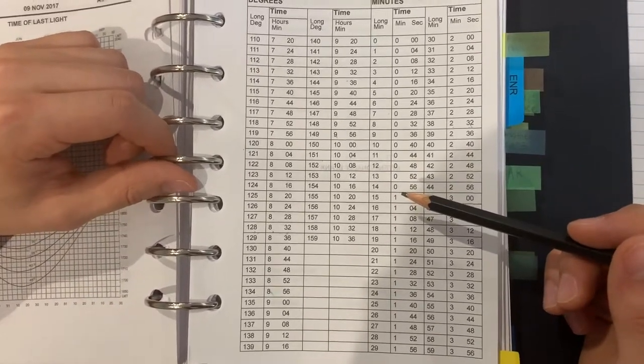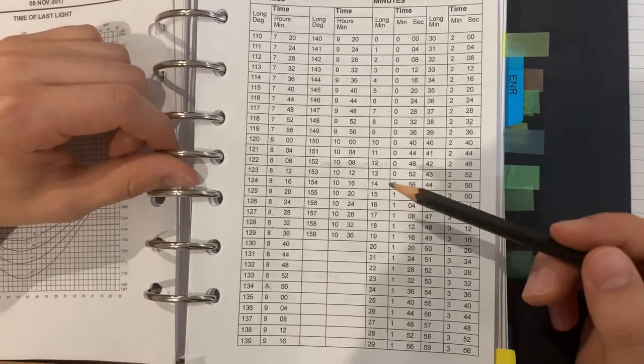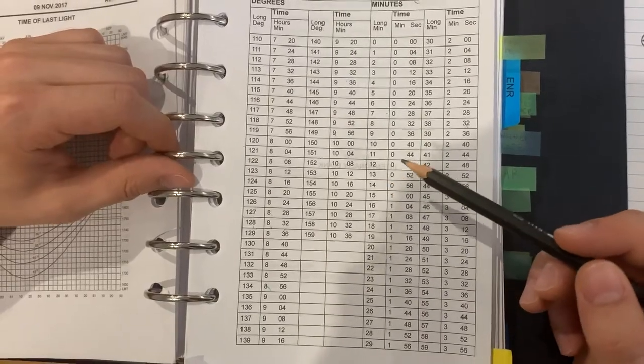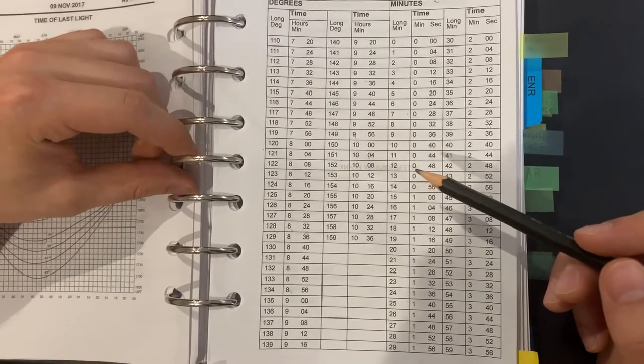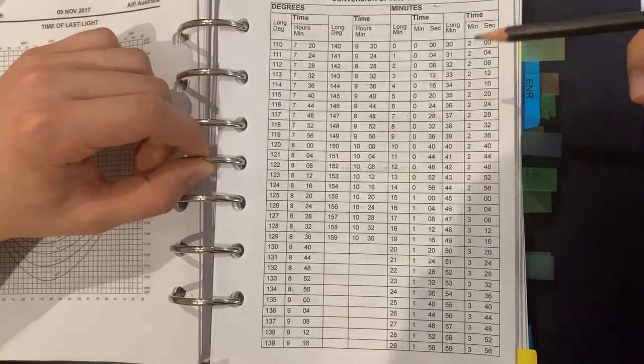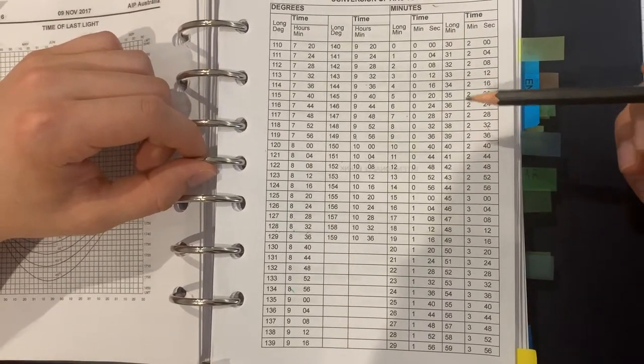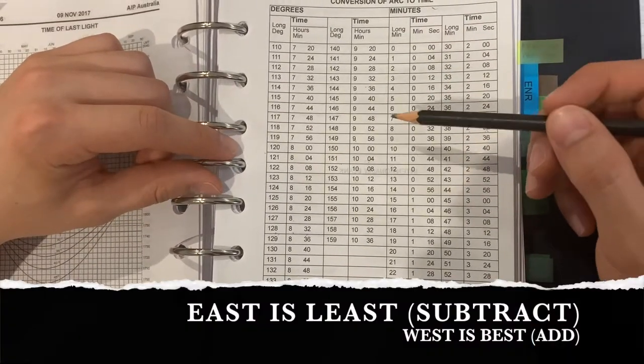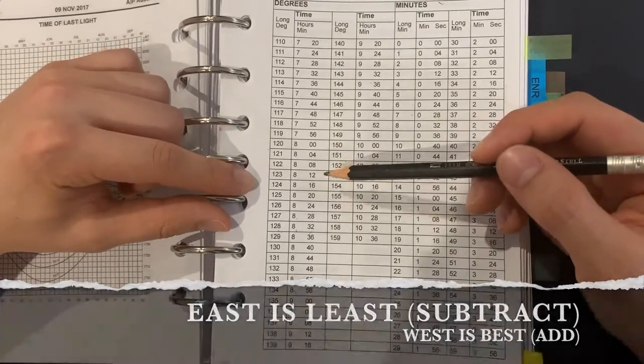Next, we need to work out whether it's west or east. Since the question stated that we are 128 and 7 minutes east, we will subtract from the local mean time.